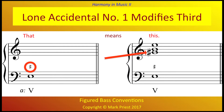A note on the thorough bass figuring, or figured bass: a chromatically altered third above the bass is indicated with an added accidental but no numeral. For example, the artificial leading tone of the dominant triad, or V chord, in A minor — G-sharp — is represented by this lone sharp in the bass figuring.